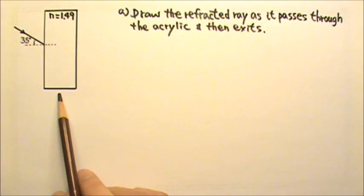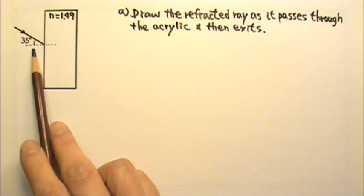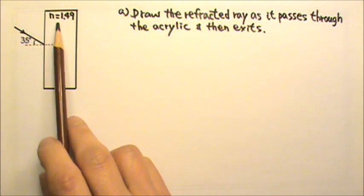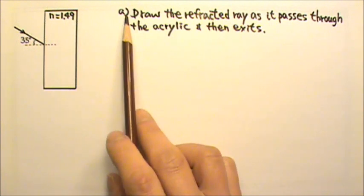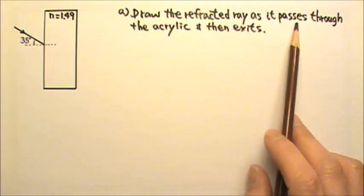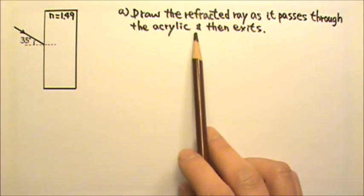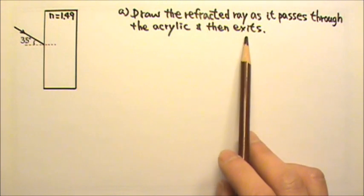Light strikes a rectangular piece of acrylic at an incident angle of 35 degrees. The index of refraction of acrylic is 1.49. Draw the refracted ray as it passes through the acrylic, and then refracts again as it exits to air.